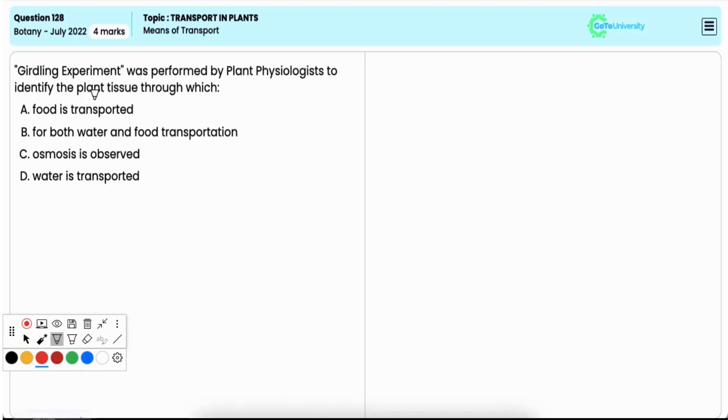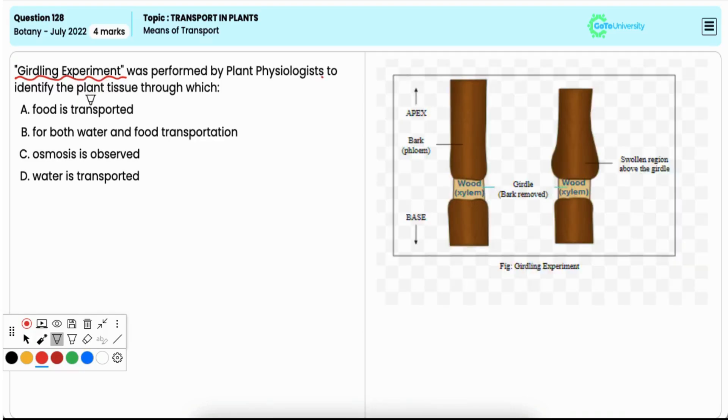In this question, you have to identify the correct option associated with the girdling experiment performed by several plant physiologists. Option A: food is transported. The girdling experiment involves removing a ring of bark, including the phloem,